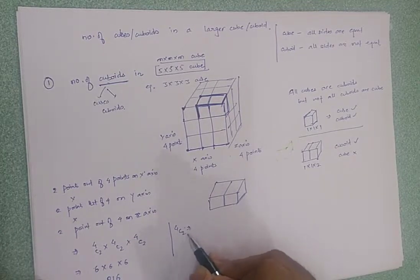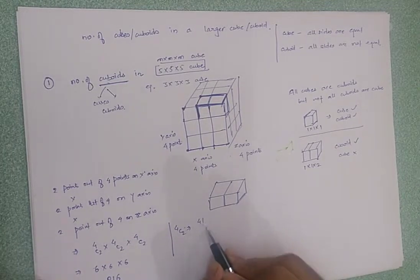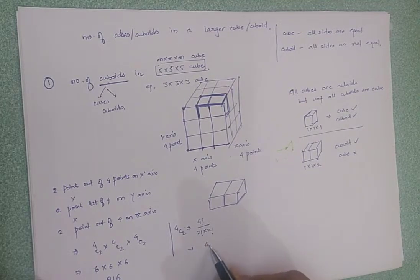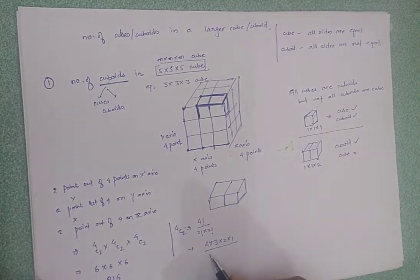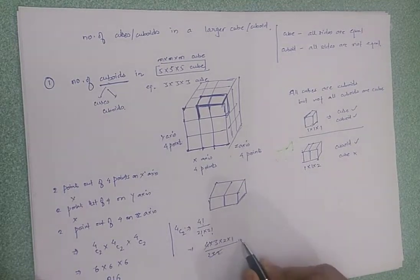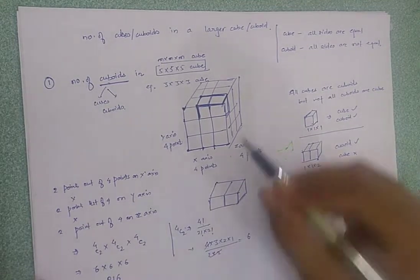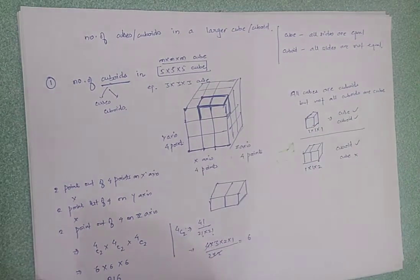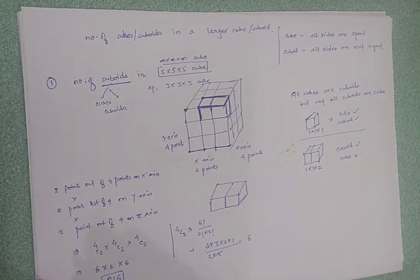So the total is 4C2 × 4C2 × 4C2. The value of 4C2 is calculated as 4! divided by (2! × 2!), which gives 4×3×2×1 divided by 2×2, equaling 6. So 6 × 6 × 6 gives us 216. In this 3×3×3 cube, we get a total of 216 cuboids.